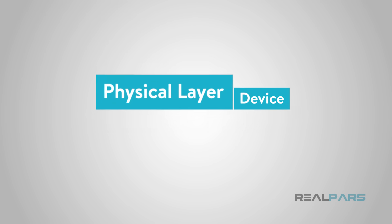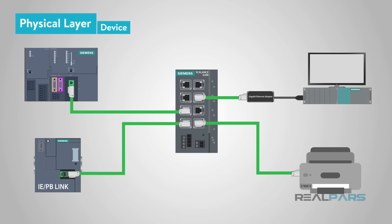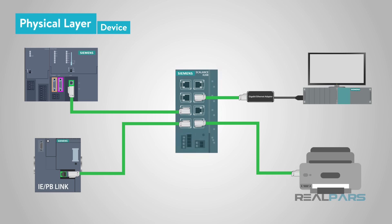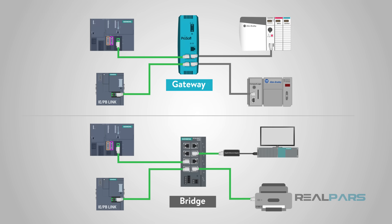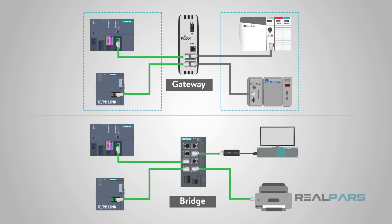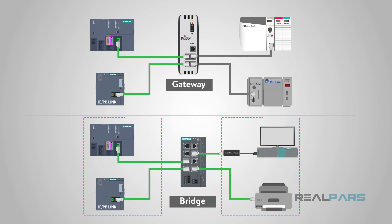Ethernet devices consist of computers, printers, or any device which either has an internal NIC, or network interface card, or an external one that is USB or PCI based. Switches and routers act as the director of the network and connect multiple computers or even networks together to enable communication between all the different devices. Gateways and bridges are used to connect multiple Ethernet networks together and allow communication across them. Gateways connect two dissimilar networks together, while a bridge connects two similar networks together so that you can only see one network.